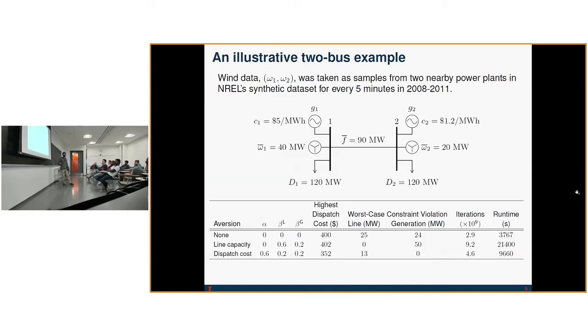For the case when the risk aversion parameter associated with lines is increased, we can see that the worst case line violation decreases. Additionally, when dispatch cost is prioritized with a higher risk aversion parameter, the highest dispatch cost decreases as well. In this way, the CVaR parameters provide a way to capture our willingness to accept constraint violation or high dispatch cost.